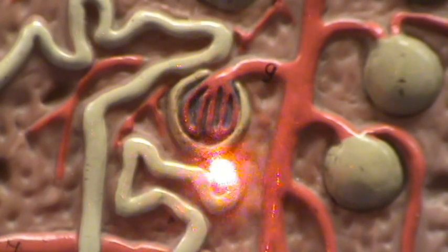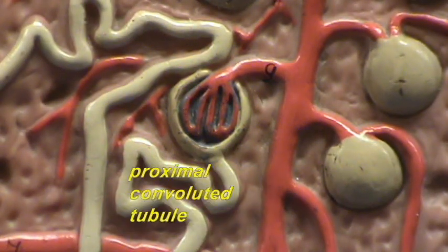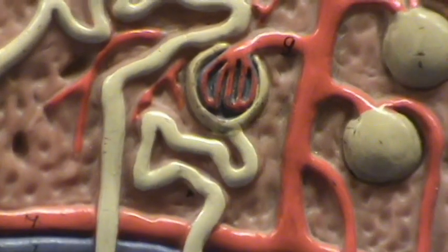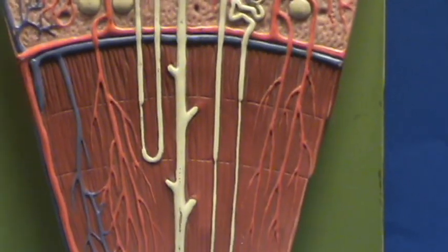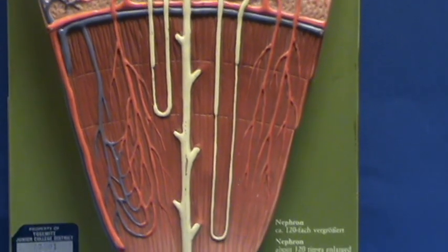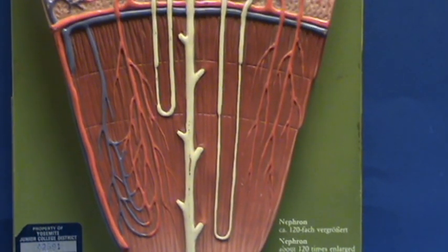The filtrate is going to drain into the proximal convoluted tubule. The proximal convoluted tubule is going to descend into the pyramid.